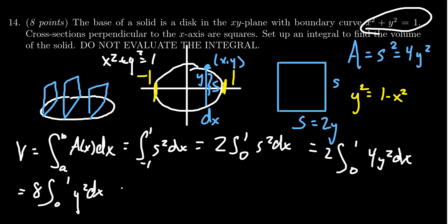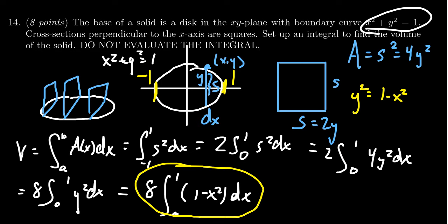So making that substitution here, we then get 8 times the integral from 0 to 1 of 1 minus x squared dx. And so this right here then gives us the integral that we're looking for. This integral would then give us the volume of this curve.